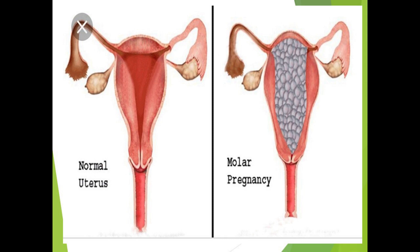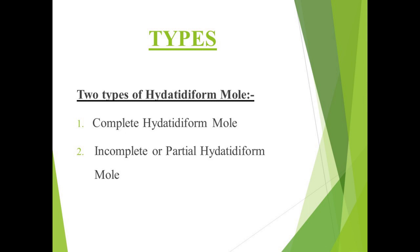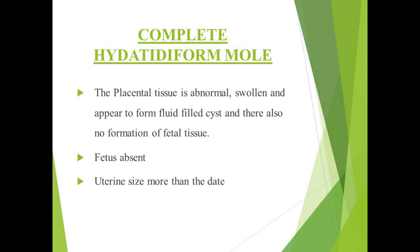Coming to the types of the hydatidiform mole or molar pregnancy, there are two main types: the complete mole and the incomplete or partial mole. In the complete mole, there is placental tissue where the defect lies — there are degenerative and proliferative changes in the placental tissue giving a swollen appearance with cysts filled with fluid. In the complete hydatidiform mole, there is no fetal tissue formation.